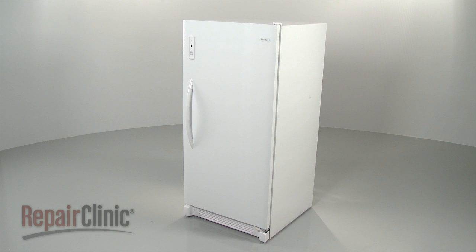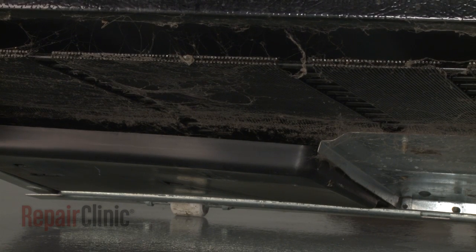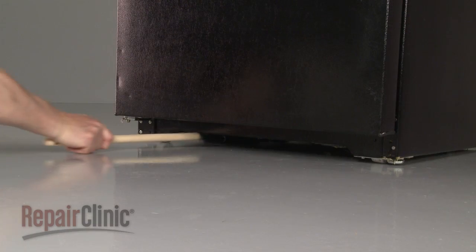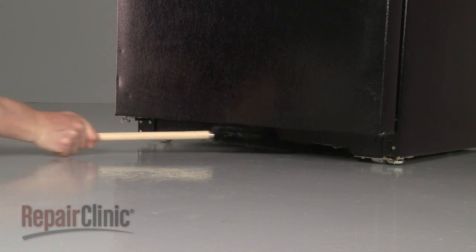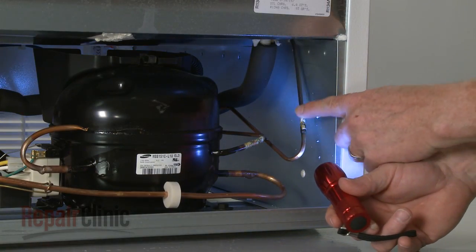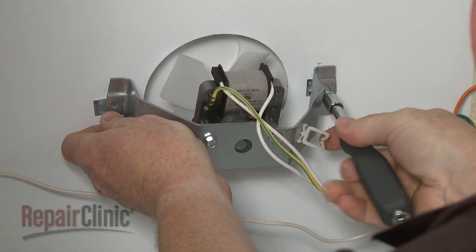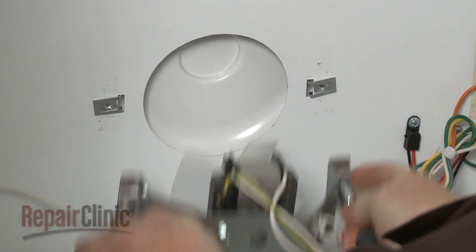If an upright freezer will not cool properly, the condenser coils may have collected too much dust, dirt, or hair and need to be cleaned. If the coils are free of debris or are inaccessible due to being contained within the walls of the appliance, the cooling problem could be caused by a failed evaporator or condenser fan motor.